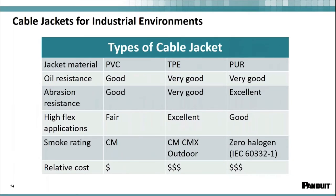In terms of cable jackets for the industrial market, PVC, TPE, and PUR are the most commonly found and used. PVC is the most cost-effective, but its performance is less than TPE and PUR. TPE is becoming what I consider the go-to cable jacket — volumes being used today are ever-increasing, and its performance is second to none in terms of oil resistance, HyFlex applications, smoke ratings, and abrasion resistance. PUR is less common and more of a standard in Europe, whereas TPE is becoming more of a standard here, particularly in the automotive industry.